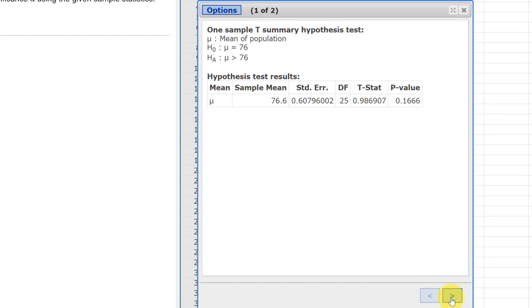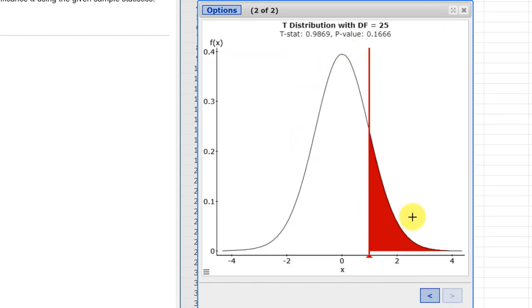Down at the bottom, if we click on this greater than symbol, we will get the probability sketch, and you can see that the area under the curve to the right, because we've got a right-tail test, is 0.1666.